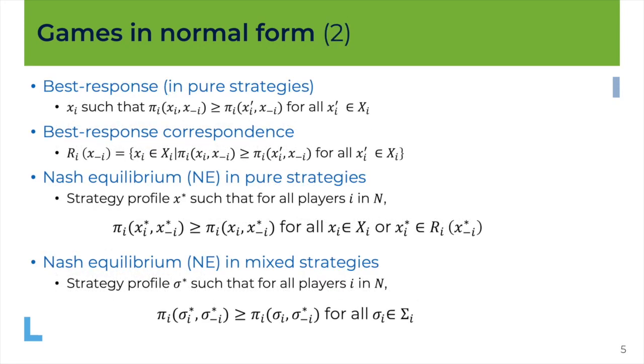So the most important concept that we will use all the time is the concept of a best response. Let's start with the best response in pure strategy. It's a strategy xi that is such that given what the other players are choosing, so x minus i, this strategy xi gives you the largest profit that you could obtain over all the actions you could choose. So the profit you gain by playing the strategy xi is larger than the profit you gain by playing any other strategy xi in your set of available strategies. So this is why we call this best response to what the other players are choosing. This is the best you can do, this is how you maximize your profit over all the actions you could choose from.